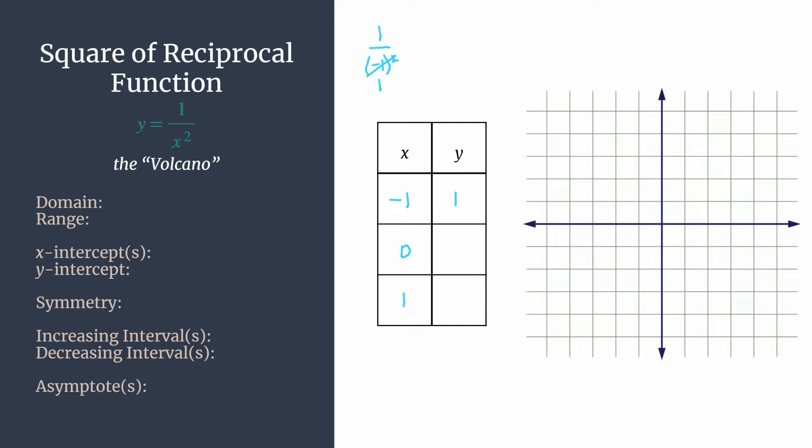Okay, this is where we see a similarity to the reciprocal function. When you substitute in zero, you end up with a denominator of zero, which we cannot have. So we have another output that is undefined. Zero is not a valid input. And that should already be making you think this is another one that's going to have an asymptote right there at x equals zero, or on the y-axis.